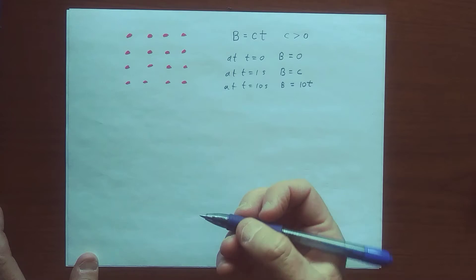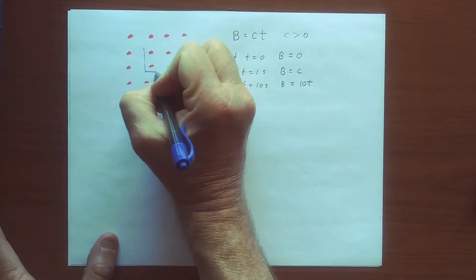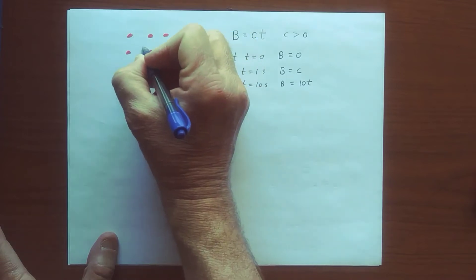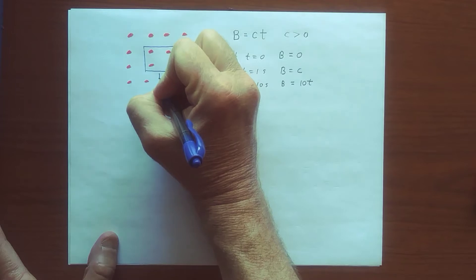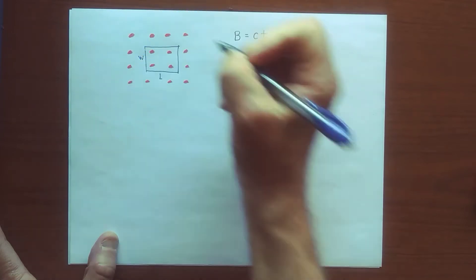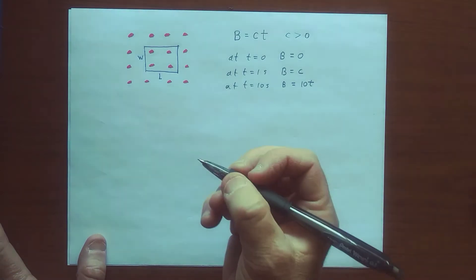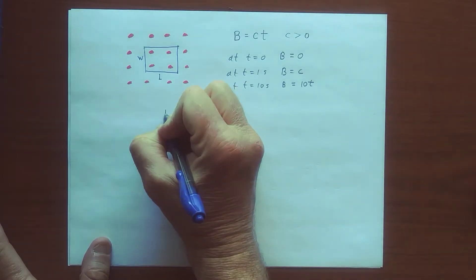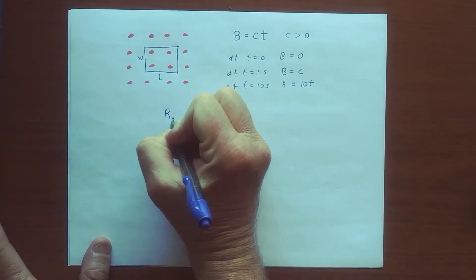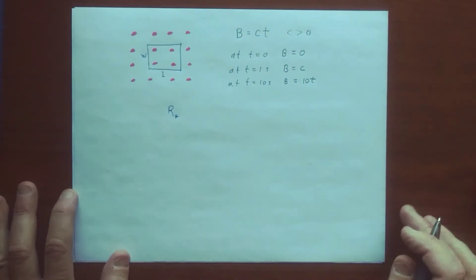Now let's imagine that we have a rectangular loop that we place into the magnetic field like that. Let's say the length here is L and this side is W. And we want to find the EMF and the current that's induced. Let's say that the resistance of this loop is R star and it obeys Ohm's law.